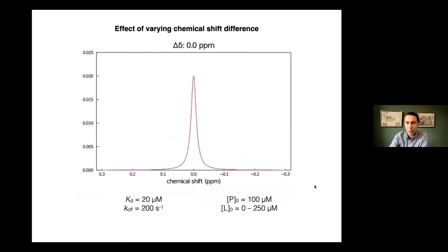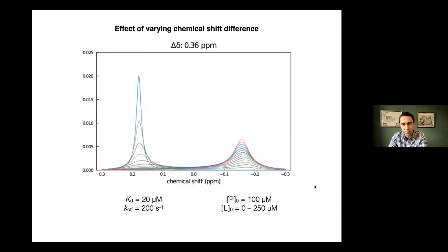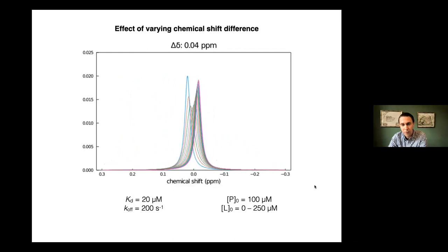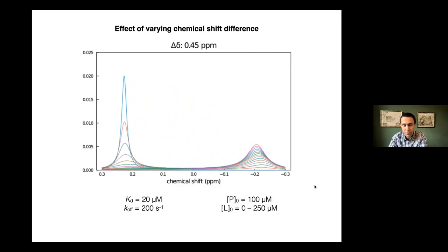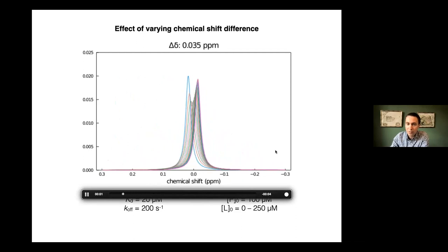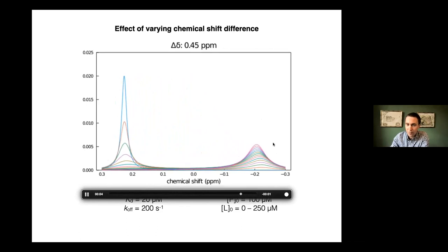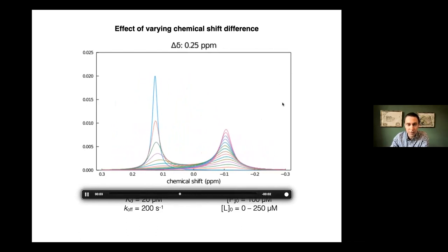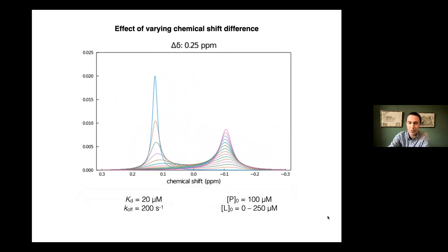We can also look at what happens if we vary the chemical shift difference. As we increase the chemical shift difference, we move from fast exchange into slower exchange where we see two separate peaks. Notably, as these peaks move apart, the intensity of the bound state on the right-hand side does not increase to match the free state.